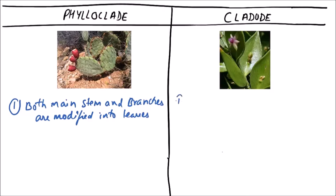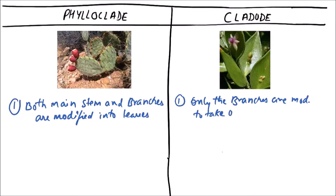In a cladode, only the branches are modified to take over the function of photosynthesis.